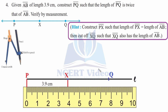Draw line L by assumption, then mark point P. Following the hint, construct PX equal to 3.9 cm directly with the ruler. Now for XQ, set your compasses to 3.9 cm, place the needle on X, and make an arc at Q. Wherever the arc falls, that distance will be 3.9 cm.